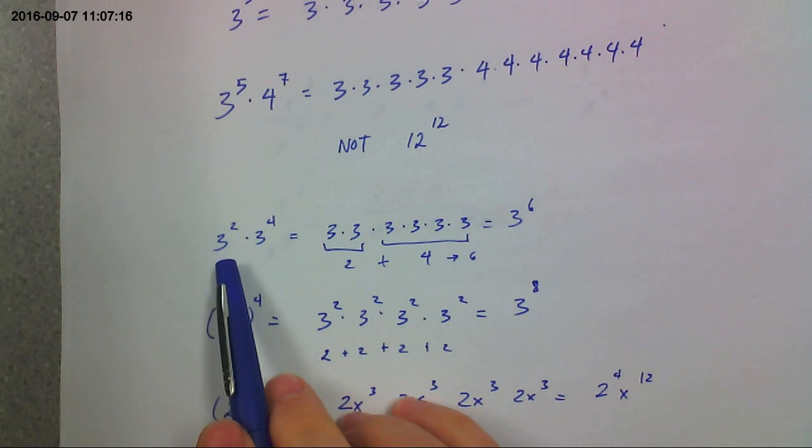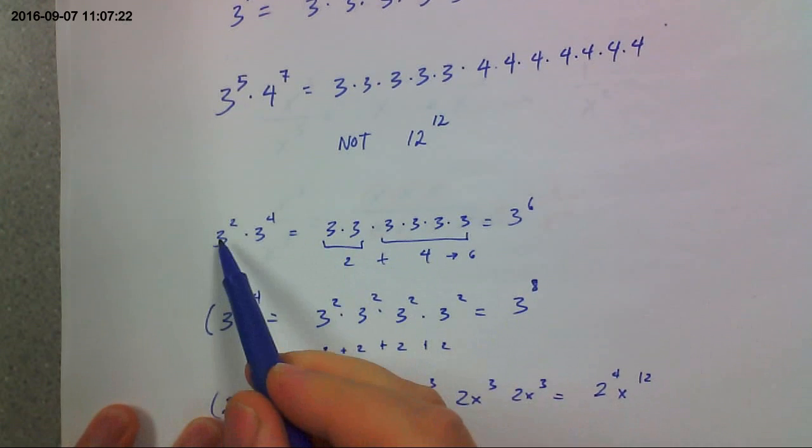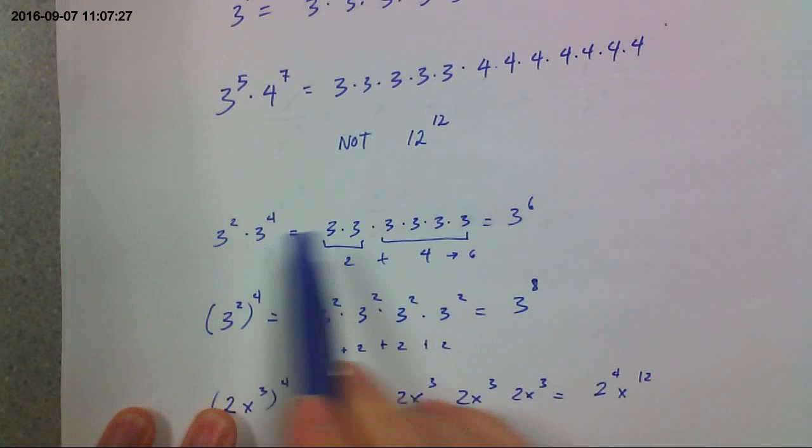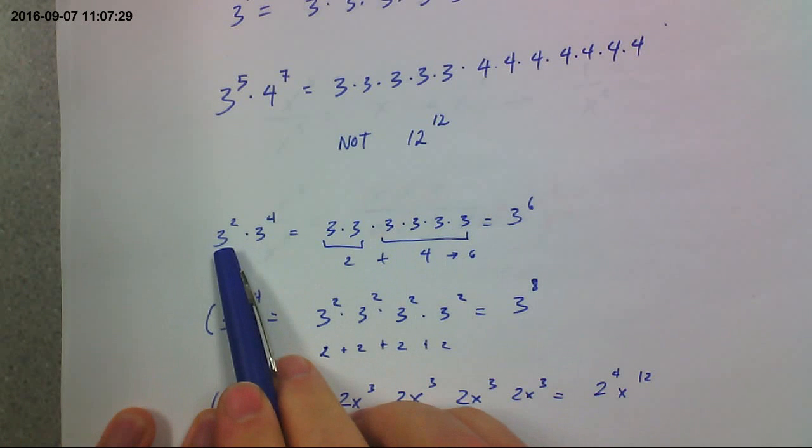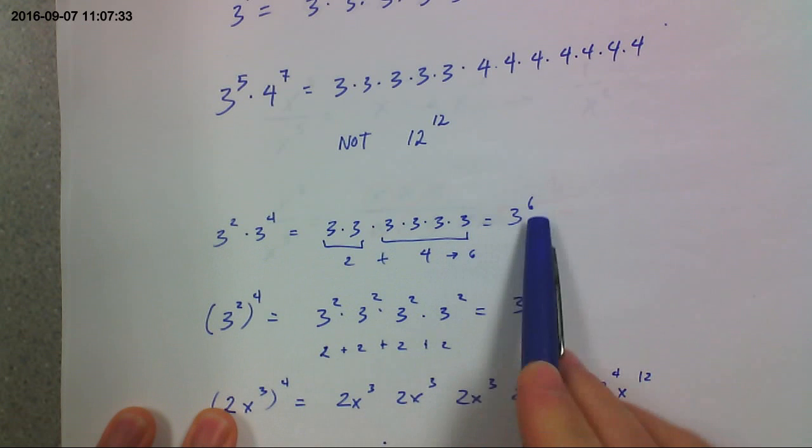Now, we just said that order of operations says you have to do exponents before you can do multiplication. The thing is here, we're repeatedly multiplying the same thing. So you can go ahead and just add those exponents together. See, there's 2 3's here. There are 4 there. And if you write them all out, add them up, you see you get 6.